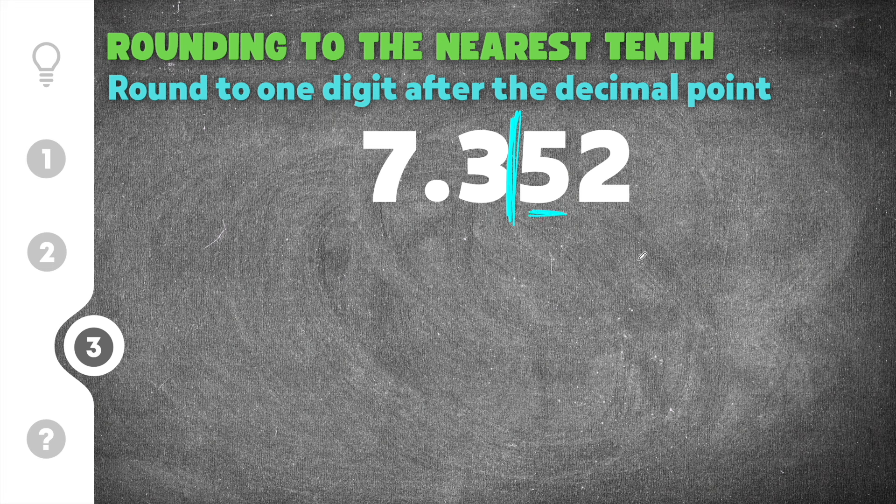Now five is typically the most confusing because it's right in the middle, and sometimes people will get confused if that's going to round the number up or if it's going to stay the same. Now the number five is closer to the number nine than it is to the number zero. This means that it's going to make our number round up, so we're going to round the three up to a four.